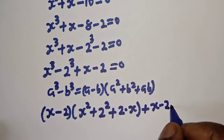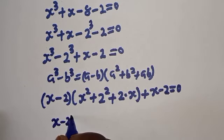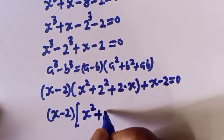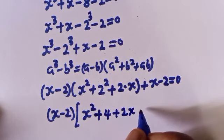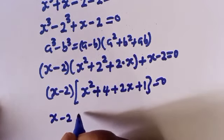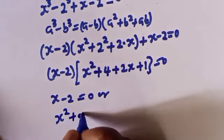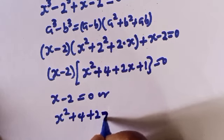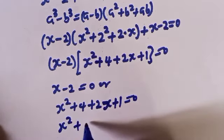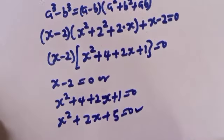Then s minus 2 is common here. We have s minus 2 bracket (s squared plus 4 plus 2s plus 1) is equal to 0. Now this gives s squared plus 2s plus 5 is equal to 0. This is a quadratic equation.